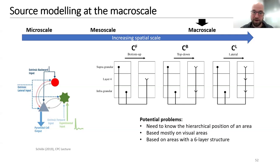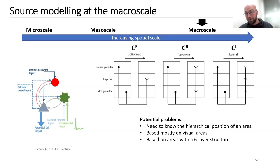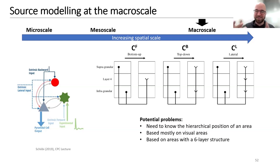Knowing the hierarchical position of an area simplifies the connectivity problem, and this works well for visual cortex which is well understood. However, there can be problems if you don't know an area's hierarchical position — for example it may be hard to say whether dmPFC or vmPFC is higher. The framework is also mostly based on visual areas and six-layer cortical structure, so it may not translate well to subcortical structures, cingulate cortex, or agranular areas like motor cortex.